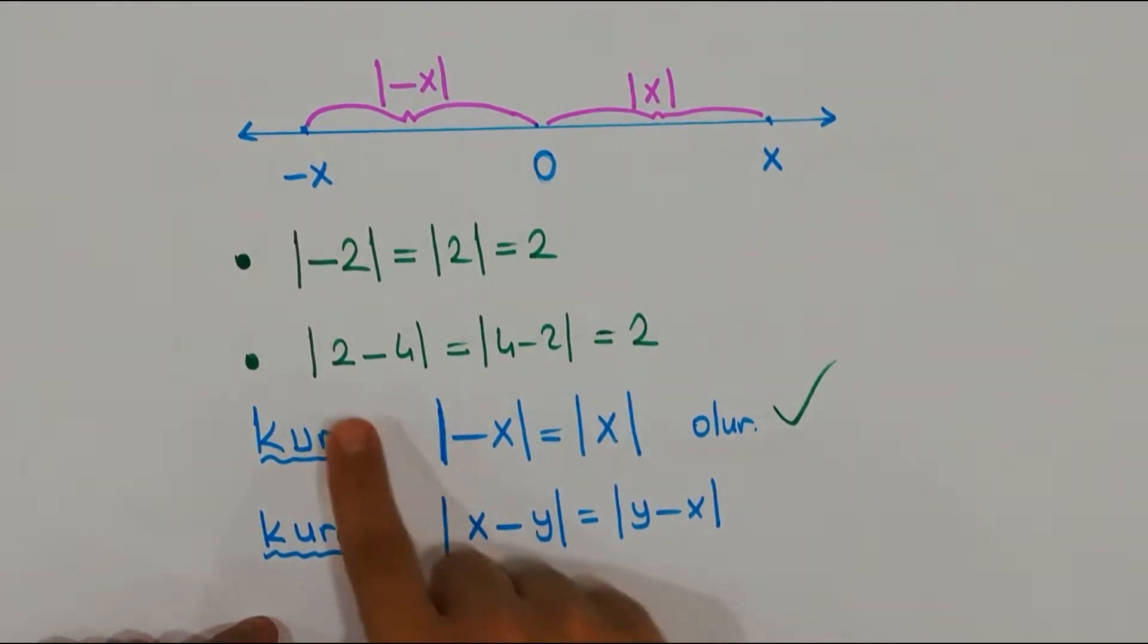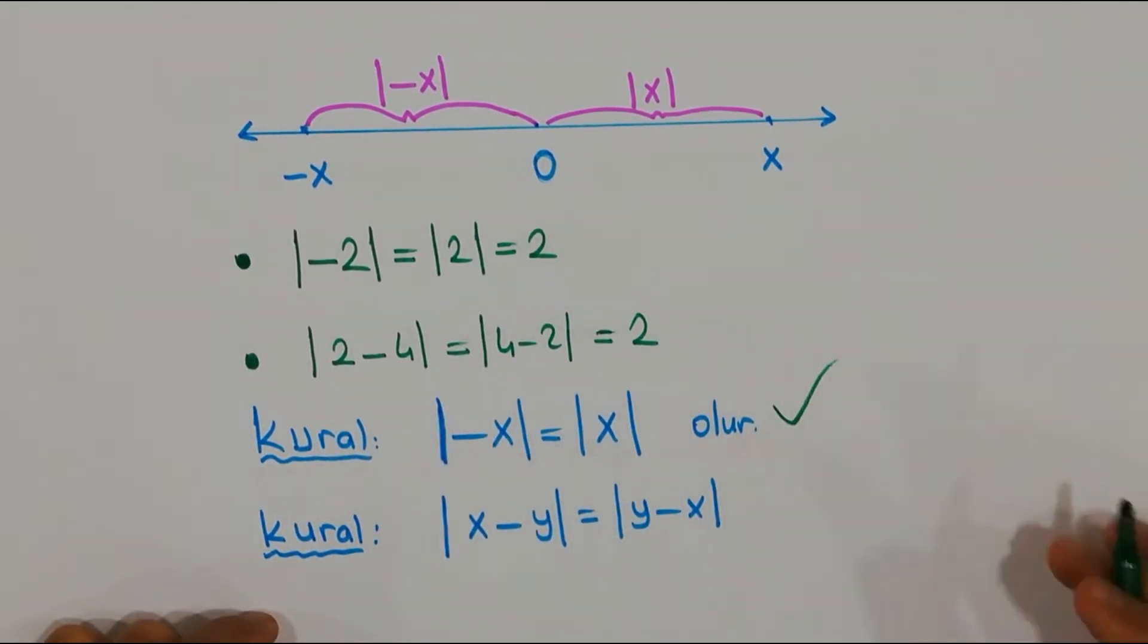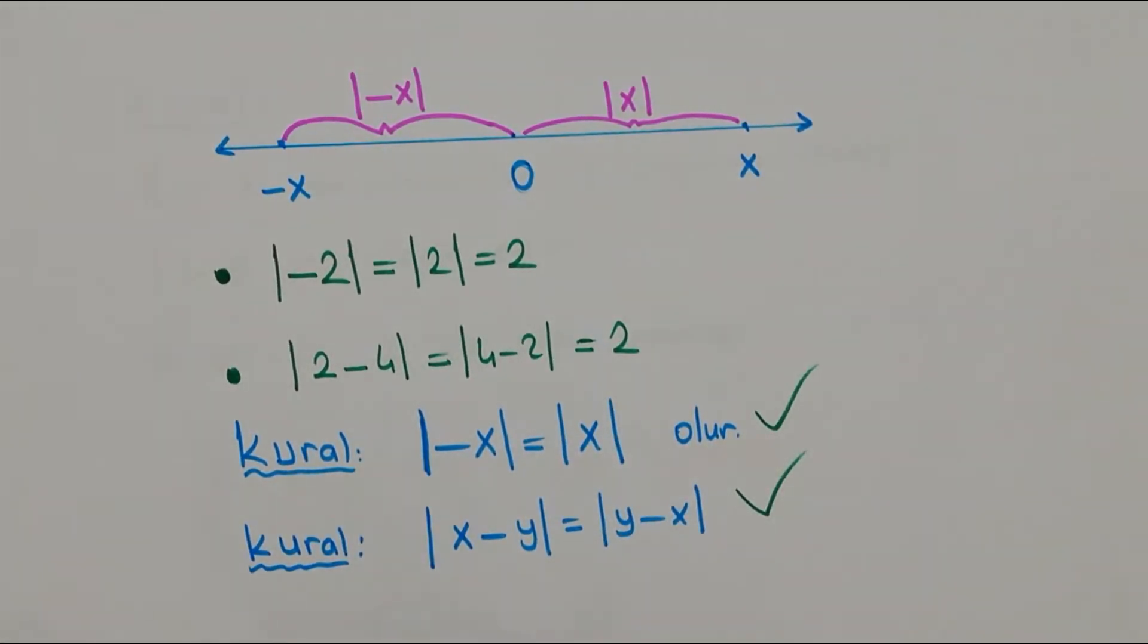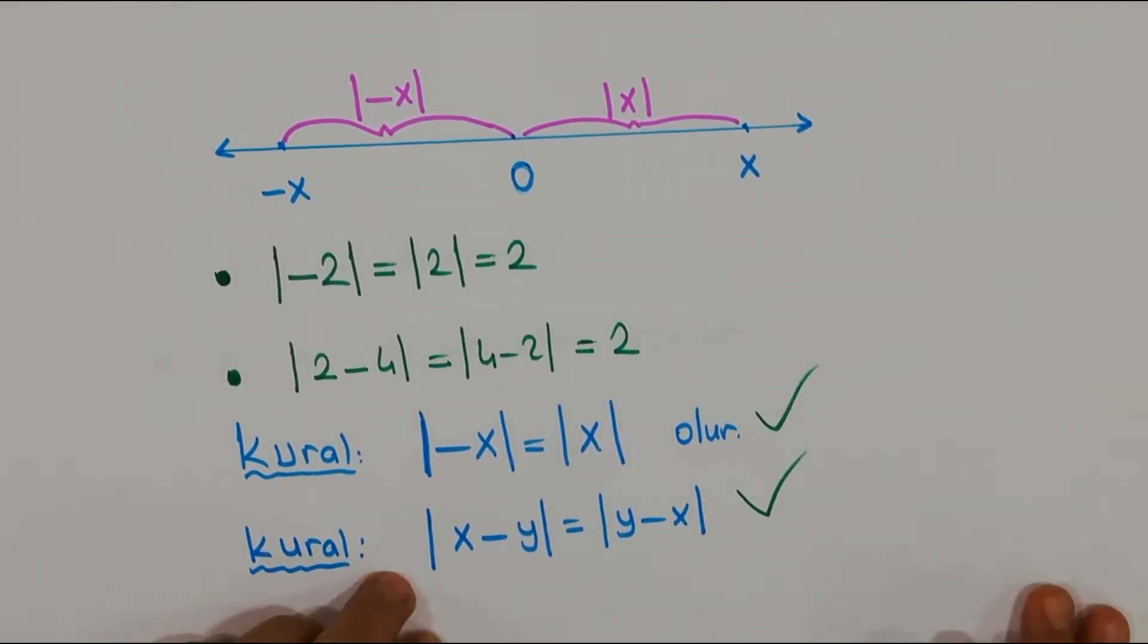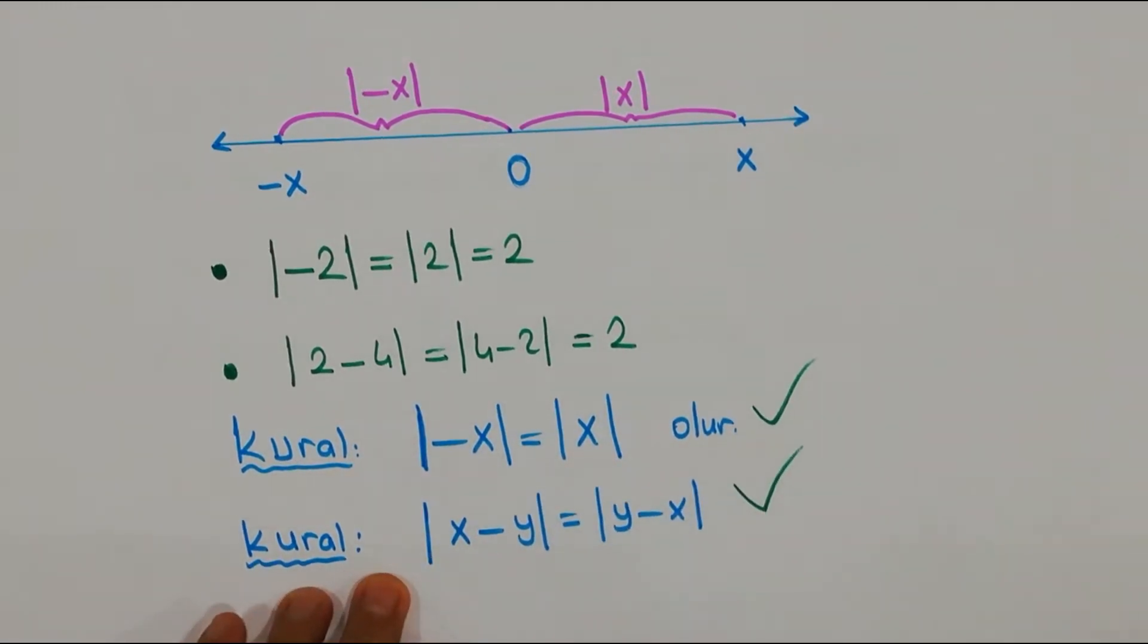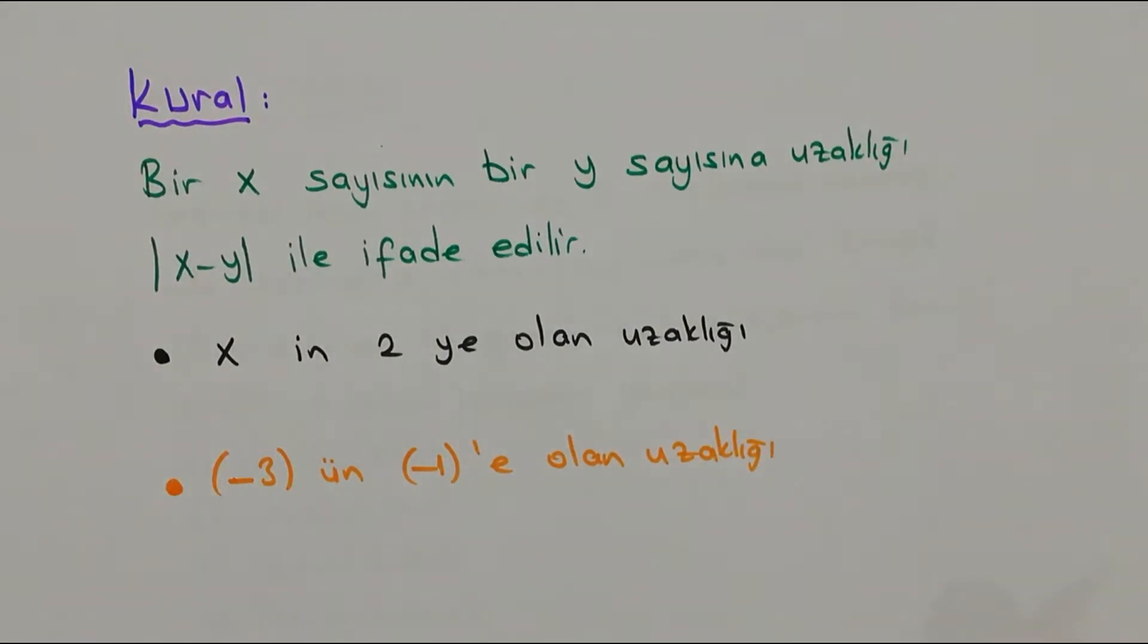Bakınız, kural geldi bir tane: Eksi x'in mutlağı artı x'in mutlağına eşit. Bu çok işimizi kolaylaştıracak. Hemen bir örnek: Eksi 2'nin mutlağı ne demek? Eksi 2'nin sıfıra olan uzaklığı, bunu zaten biliyorsunuz ve 2'nin mutlağı da yine 2 diye karşımıza çıkar. 2'den 4'ü çıkarın, eksi 2, eksi 2'nin mutlağı yine artı 2. Bu da zaten özellik diye karşımıza gelecek. Yani yerler değişince mutlak değer içinde sayıların yerini değiştirdiğinizde kesinlikle bir problem çıkmıyor ve birbirine eşitir.